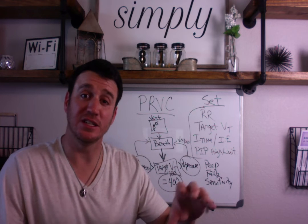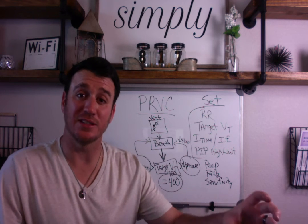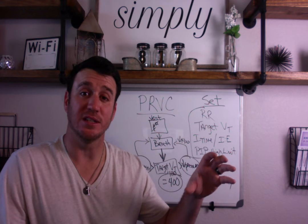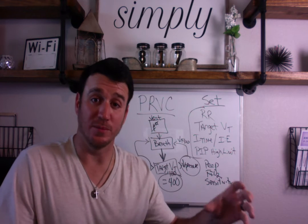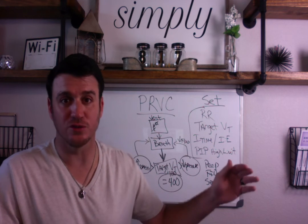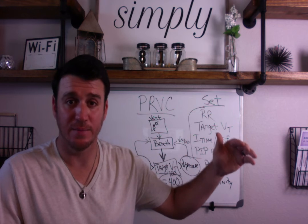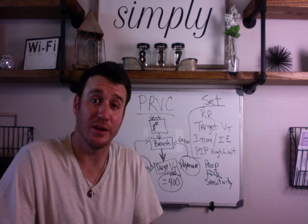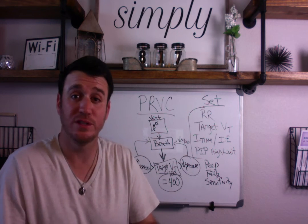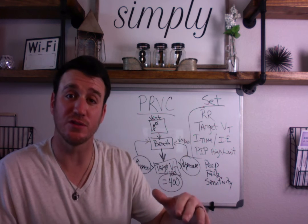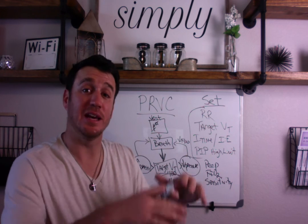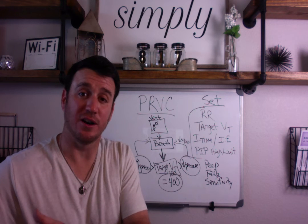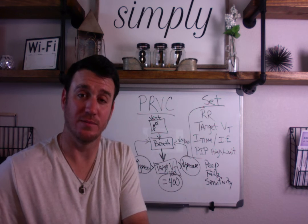If lung condition worsens and compliance goes down, volumes will go down and pressures will creep up. Conversely, if lung compliance improves, you'll see peak inspiratory pressures going down because you need less pressure to achieve the same target tidal volume.